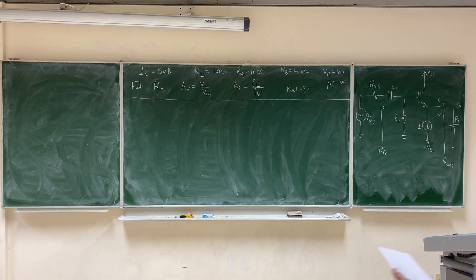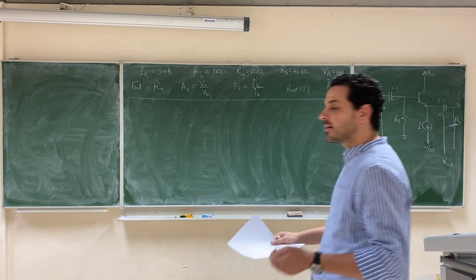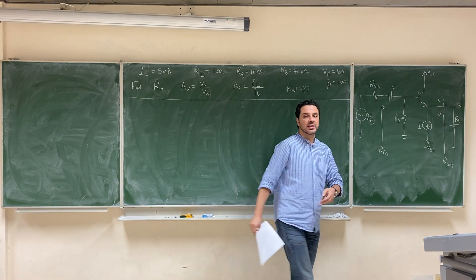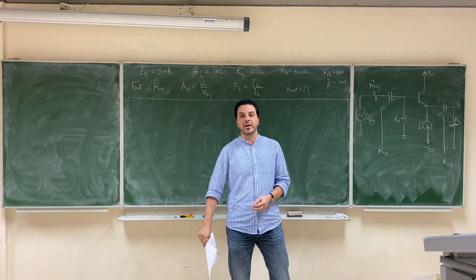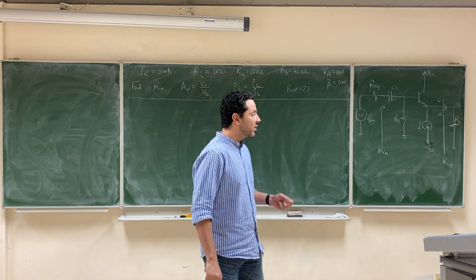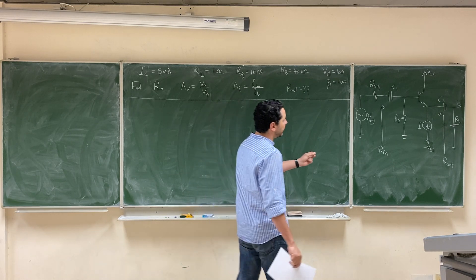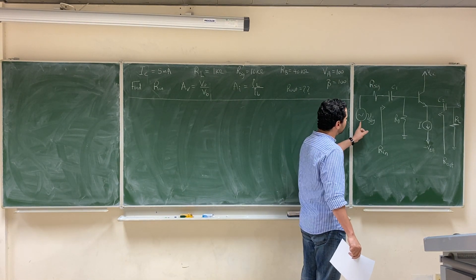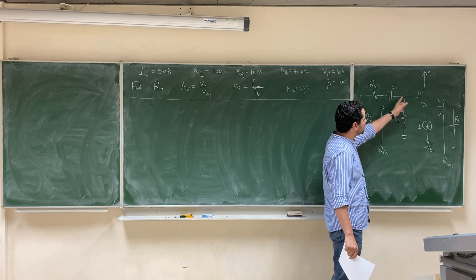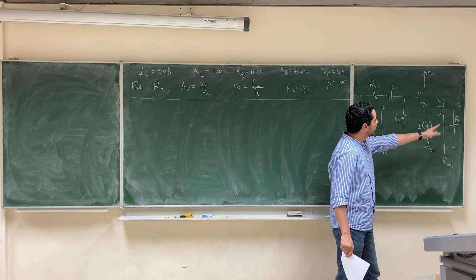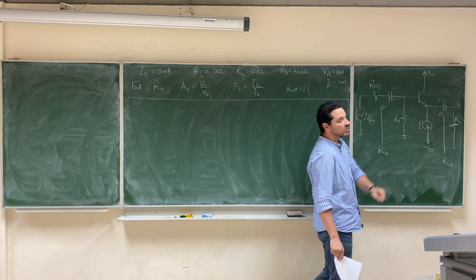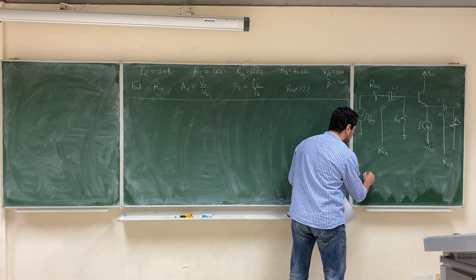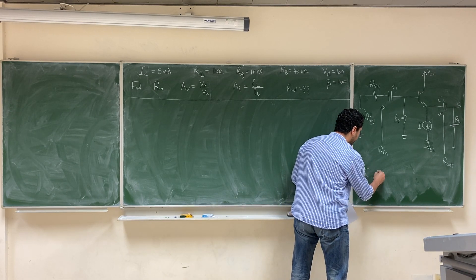Here is another example with another amplifier circuit. Let's look at this amplifier circuit and identify which family it belongs to. If we look carefully, we'll find that the signal or the voltage that we want to amplify is connected towards the base, and the output is taken from the emitter. So this is a common collector amplifier.